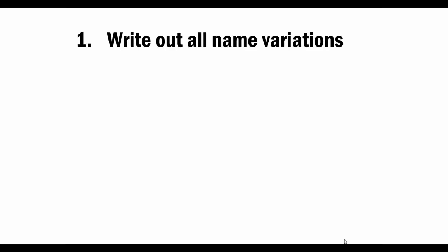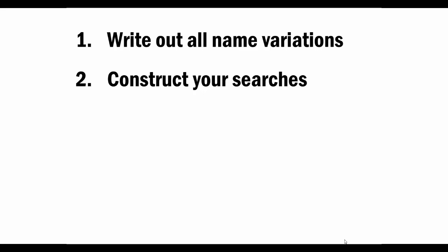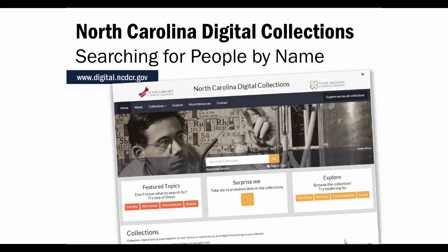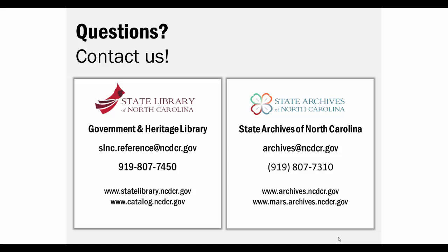Today we've covered five steps: 1. Write out all variations of the person's name. 2. Construct your searches using the Advanced Search in the North Carolina Digital Collections. 3. Filter your search to narrow your results. 4. Limit the collections your search looks in to narrow your results even more. And 5. Try Google if your searches are still too large. Happy hunting, and thanks for watching the North Carolina Digital Collections Tutorial: Searching for People by Name. Please feel free to contact us with questions.